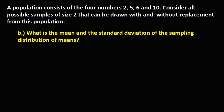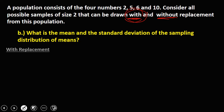For this problem, we need to find the mean and standard deviation of the sampling distribution of means — both with and without replacement. Let's solve first with replacement. We need to list all samples of size 2 with replacement from the numbers in the population.